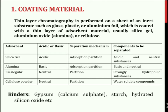Coating Material: Thin layer chromatography is performed on a sheet of an inert substrate such as glass, plastic or aluminium foil, which is coated with a thin layer of adsorbent material — usually silica gel, aluminium oxide or cellulose. Absorbents do not adhere very satisfactorily to glass plates, so to overcome this problem, binders like gypsum, starch, and hydrated silicon oxide are used.